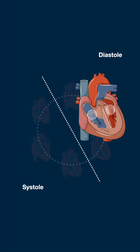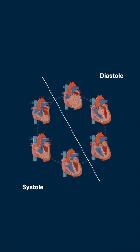As atrial pressure builds and exceeds ventricular pressure, the AV valves open, allowing passive ventricular filling, and the cycle repeats.